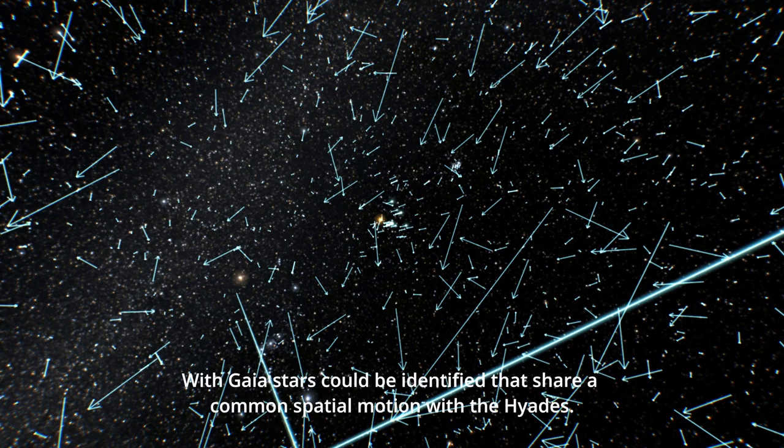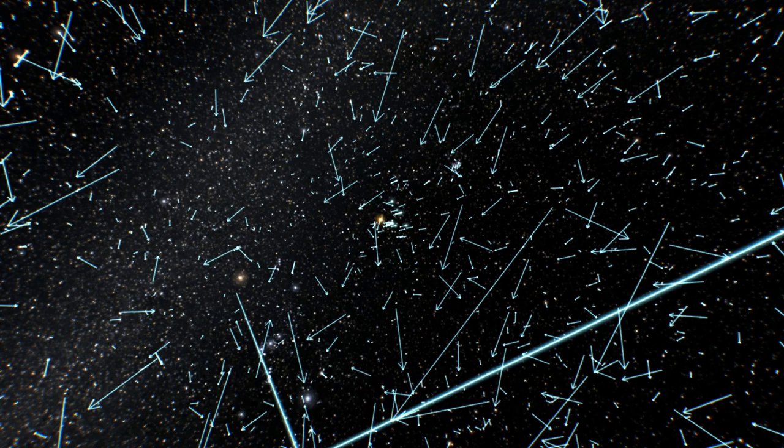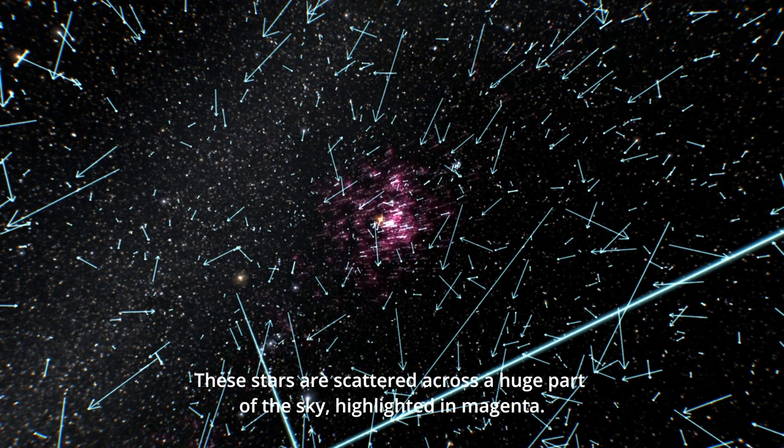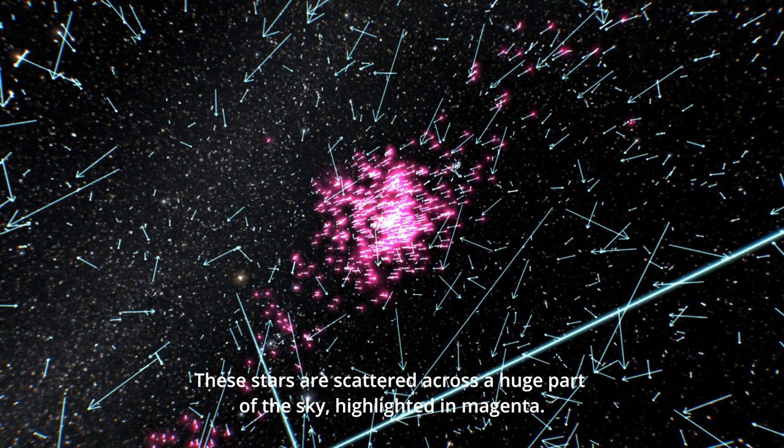With Gaia, stars could be identified that share a common spatial motion with the Hyades. These stars are scattered across a huge part of the sky, highlighted in magenta.